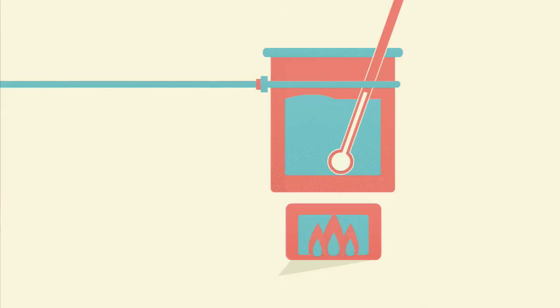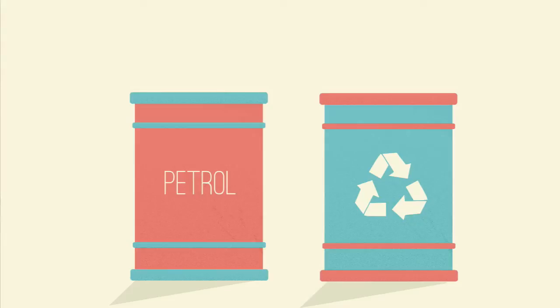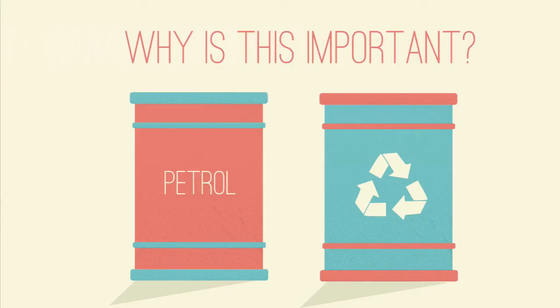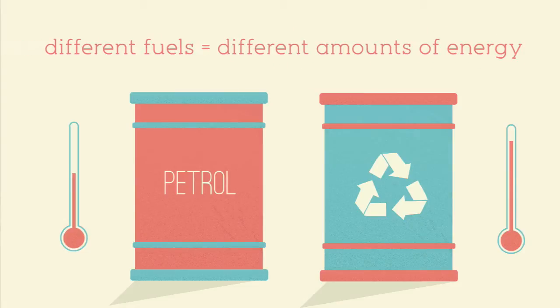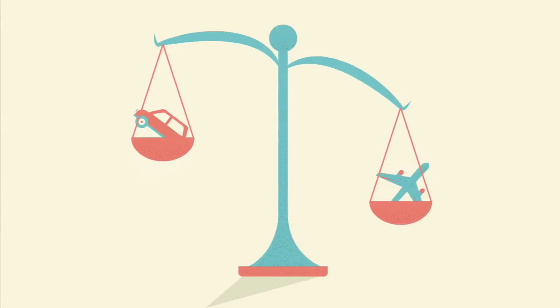In a typical calorimetry experiment, you can measure the energy that is released from fuels. Can you think why this might be important? The answer is that different fuels release different amounts of energy. So if you are flying a plane, you need a fuel which releases more energy than if you were driving a car. This is because the plane is heavier than the car, so more energy is needed to make it move.